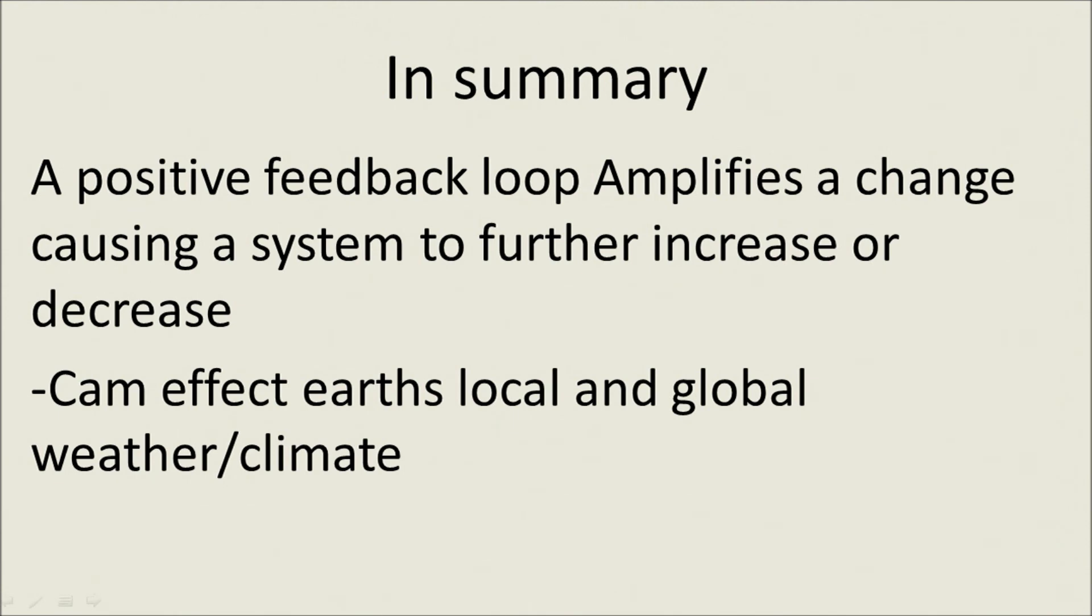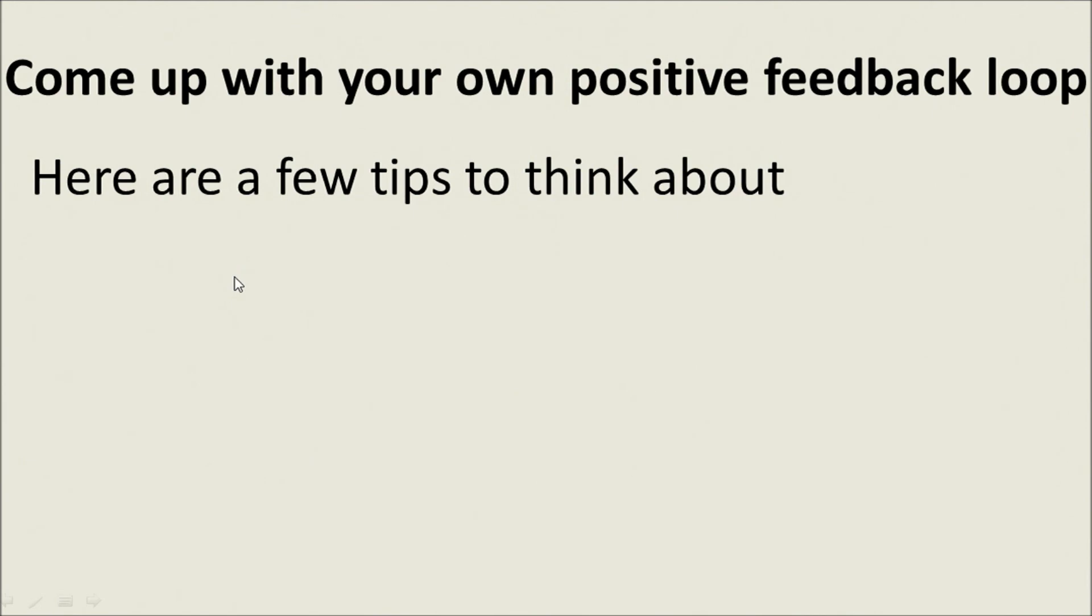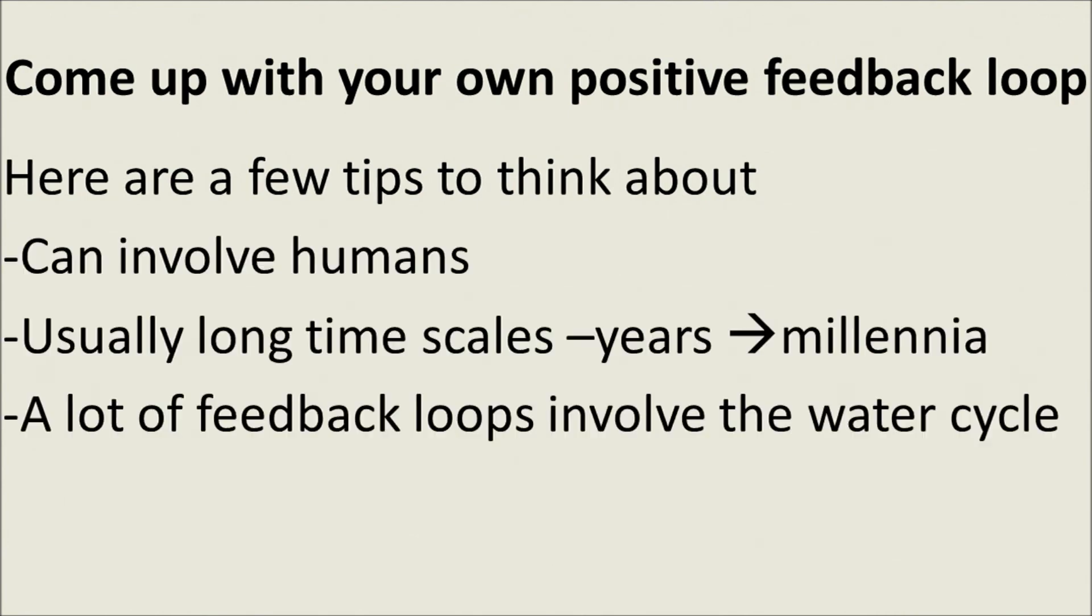Let's go ahead and summarize this up. Summary, what is a positive feedback loop? Something that amplifies a system causing a further increase or decrease. And, for Earth, it can affect Earth's local and global weather or climate. It can affect both, and it does. Try out one of your own. See if you can come up with your own positive feedback loop now. Here's a few tips you can think about when you're coming up with your own positive feedback loop. It can involve humans. In fact, a lot of feedback loops do involve humans. So, that's a quick hint. Think about that. A lot of humans do things to the Earth. Usually, long-term timescales. Think years. At the bare minimum, our drought example is going to take a couple of years. But, they can also go up to thousands or even millions of years if you're talking plate tectonics. Hint, hint. And, lastly, a lot of feedback loops involve the water cycle. You'll see that both of my examples and my question involve water. Think about the water cycle or something, at least, with water in there. Anyway, that's positive feedback loop.